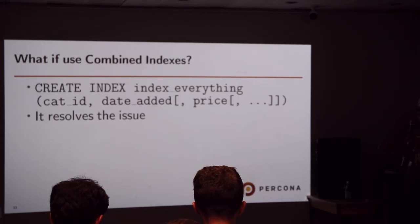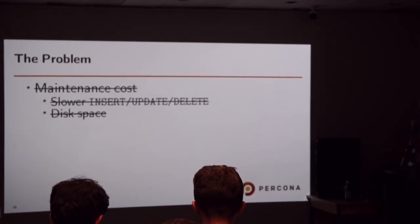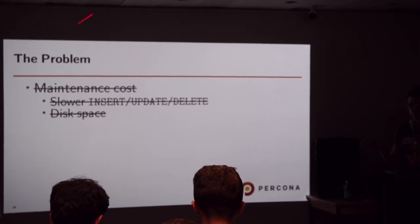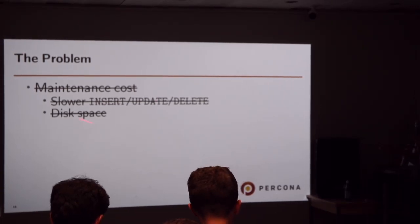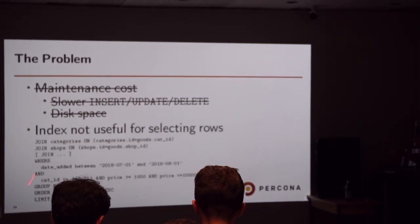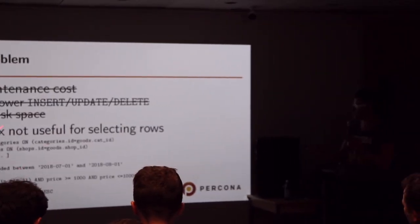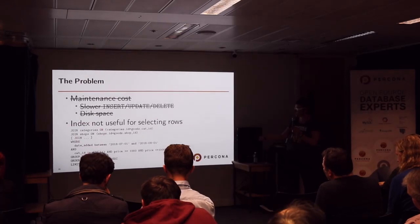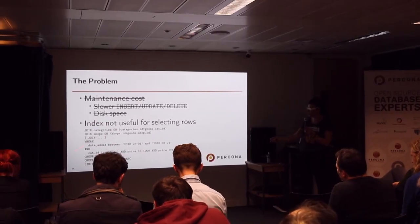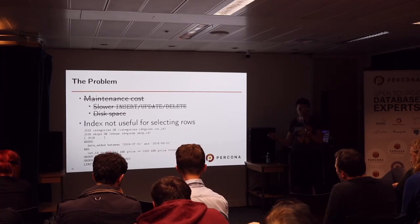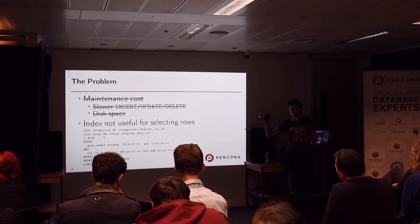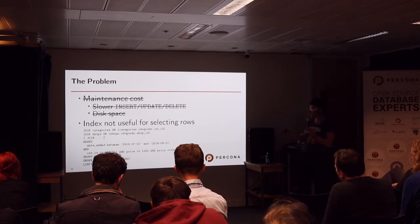What if you create new combined indexes on category ID and all these conditions? It resolves the issue, but I'm not focusing on that here — we're not talking about indexing. We've spent more than 30 years of MySQL life learning to deal with these. In real life, we don't just join two tables — we have multiple joins, multiple conditions, GROUP BY, ORDER BY, LIMIT, and sometimes you simply cannot create an index that covers everything to make a proper plan.